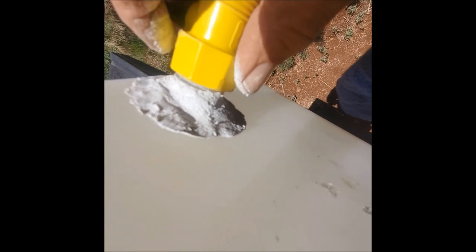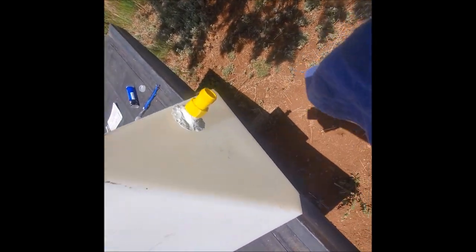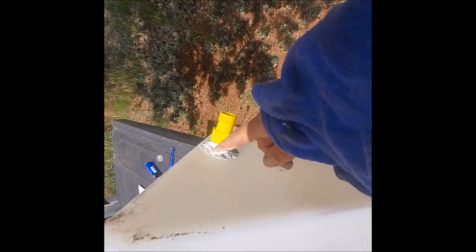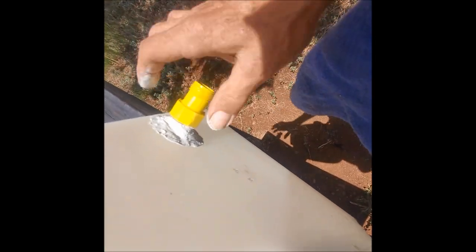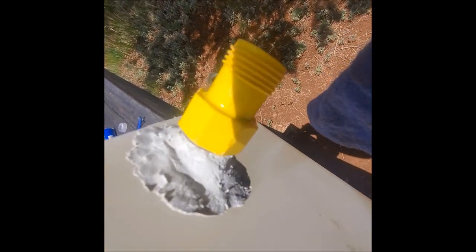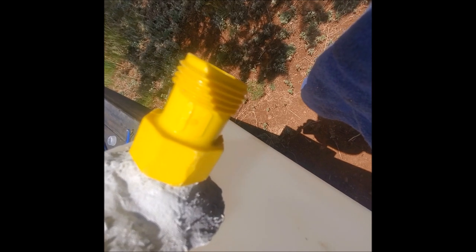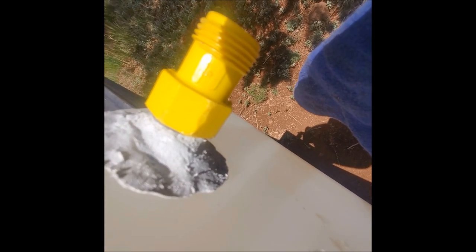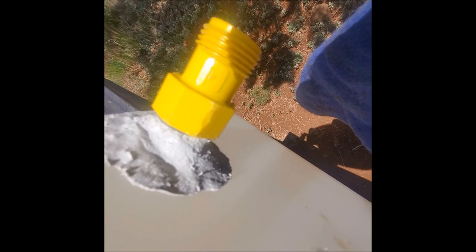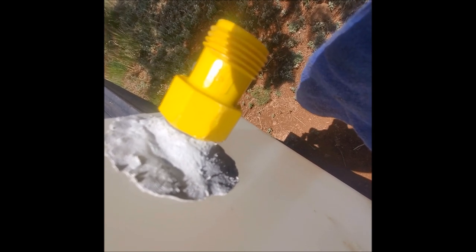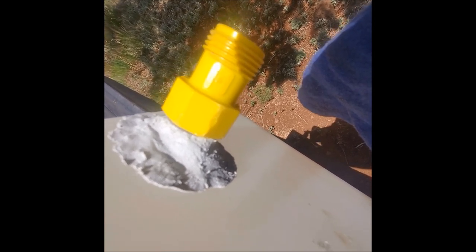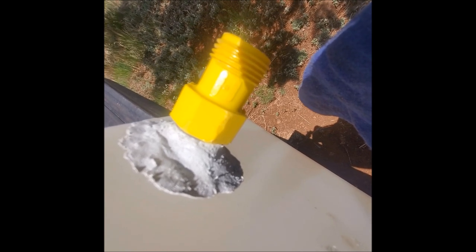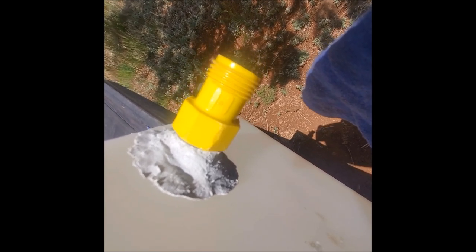And I'm hoping that two things happen: it seals any leaks, and where the thread is damaged and I thread the valve on there, that it'll take care of any leaking through the damaged threads. And in fact, maybe if I have to take it off someday, it'll actually form and make new threads there on the outlet. We'll see.